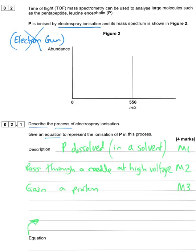The equation for electrospray ionisation is simply P + H⁺ → [P+H]⁺. This is important for the next question: since the detected species has gained a proton (mass of 1), the detected m/z will be one atomic unit higher than the actual Mr of the substance.